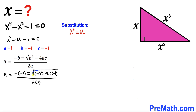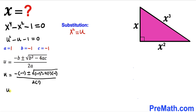Focusing on the radicand: negative 1 squared is positive 1, and negative 4 times 1 times negative 1 gives us plus 4, so 1 plus 4 gives us 5. The radicand turns out to be 5. Therefore u equals 1 plus or minus the square root of 5, all over 2.